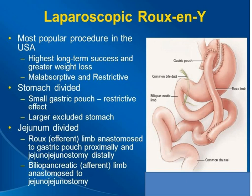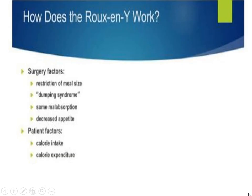Laparoscopic Roux-en-Y is the most popular procedure in the USA, with the highest long-term success and greatest weight loss. It depends on both restriction and malabsorption. The stomach is divided into two parts: a small gastric pouch with a restrictive effect, and a larger excluded stomach. The jejunum is divided into two parts — the Roux limb, which is the efferent limb anastomosed to the gastric pouch proximally and the jejuno-jejunal anastomosis distally, and the biliopancreatic limb, which is the afferent or Y limb.